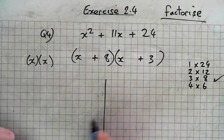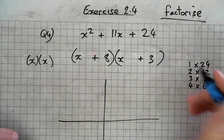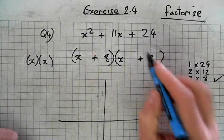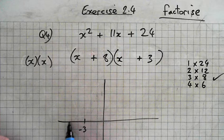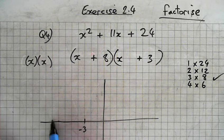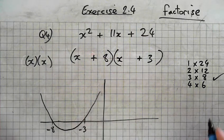So if I was drawing a graph, where does it cross the x-axis? Minus 3. Minus 3. So minus 3 and minus 8. 4, 5, 6, 7, 8. So it looks something like that.